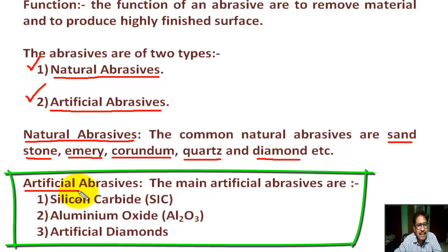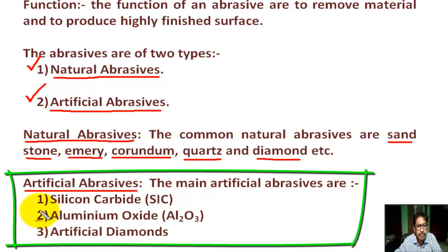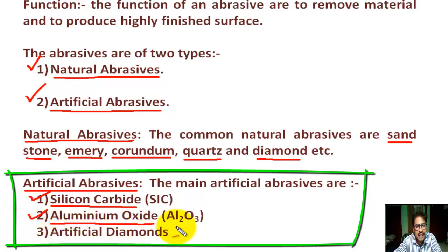Next, artificial abrasives - these are manufactured abrasives: number one, silicon carbide (SiC); number two, aluminium oxide (Al₂O₃); number three, artificial diamond.